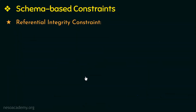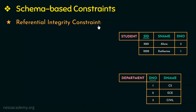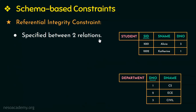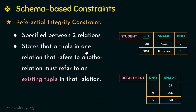The next type of constraint is the referential integrity constraint. Key constraints and entity integrity constraints are specified on a single relation, whereas the referential integrity constraint is specified between two relations. It states that a tuple in one relation that refers to another relation must refer to an existing tuple in that relation. For example, the student relation has student ID as the primary key and the department relation has department number as its primary key. The d-number in the student relation refers to the d-number of the department relation — this is the parent table and student is the child table. The values in the child table should refer to existing values in the parent table.